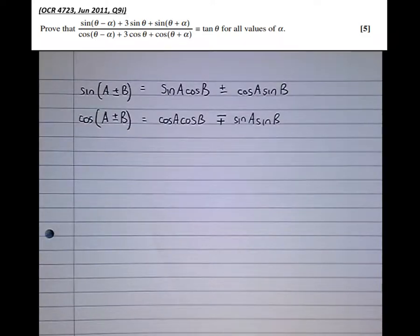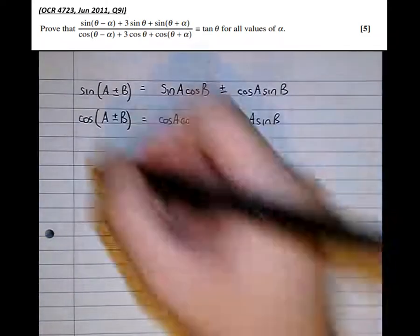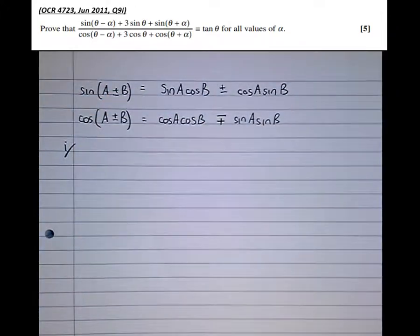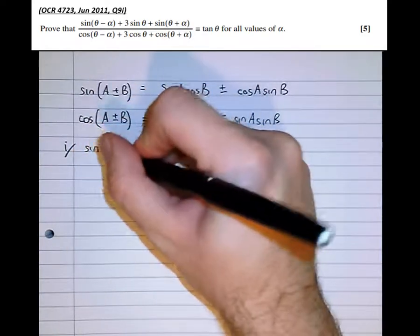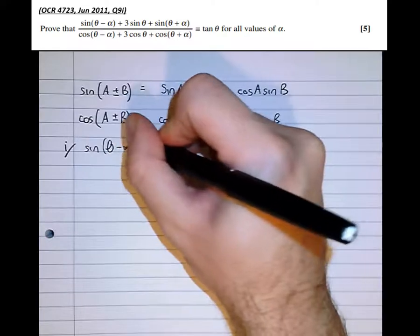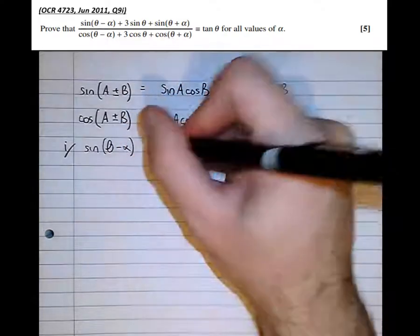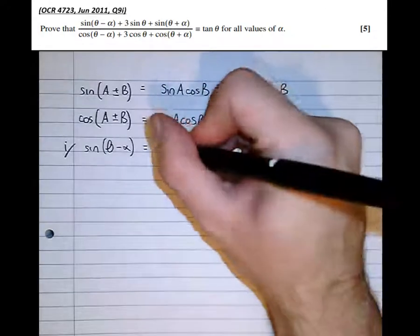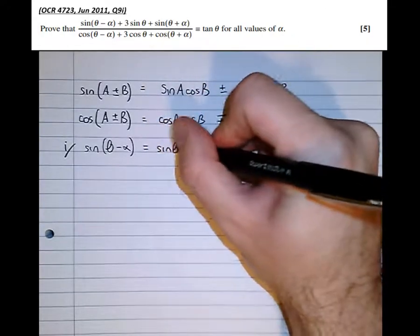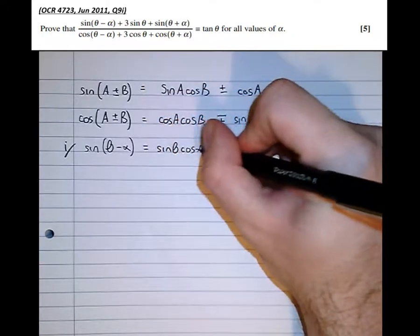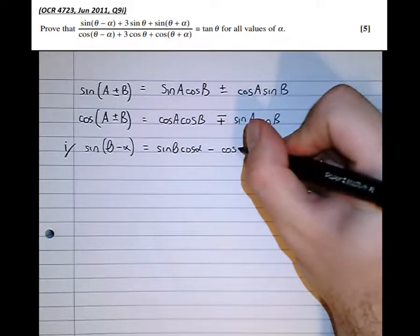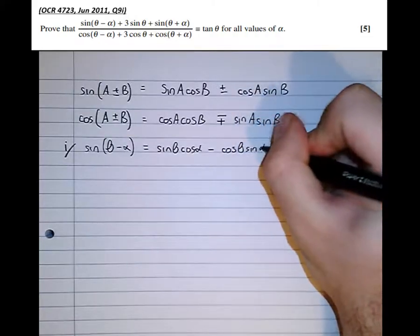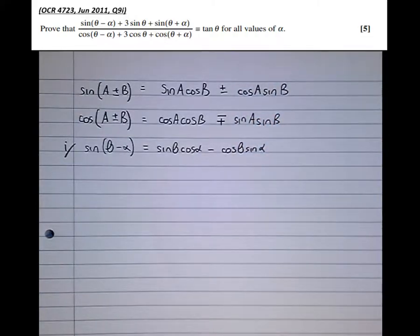Expanding sine of theta minus alpha — here theta is a and alpha is b — so substituting into the formula we get: sine theta cos alpha, minus cos theta sine alpha. And that won't simplify any further.